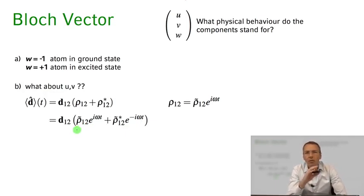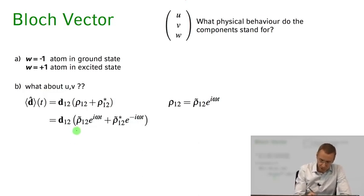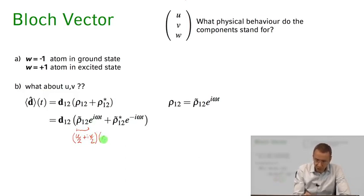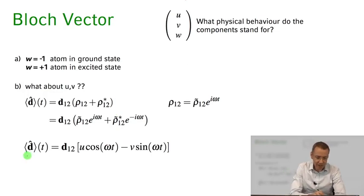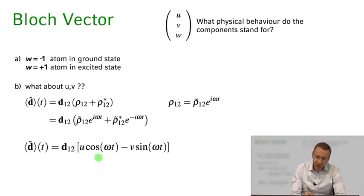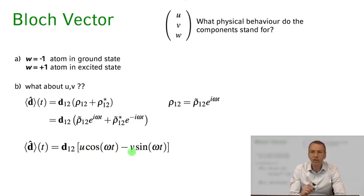Why do we introduce ρ̃₁₂? Because the Bloch vector components are defined in terms of ρ̃₁₂. Specifically, ρ̃₁₂ equals u/2 plus i·v/2. Multiplying by e^(iωt) using Euler's formula — cosine ωt plus i sine ωt — and collecting all terms, we find that the expectation value of the dipole operator equals d₁₂ times (u cosωt − v sinωt). So there is a component oscillating as cosine ωt and one oscillating as sine ωt, given by the u and v components of the Bloch vector.